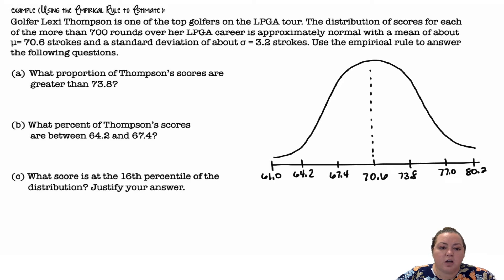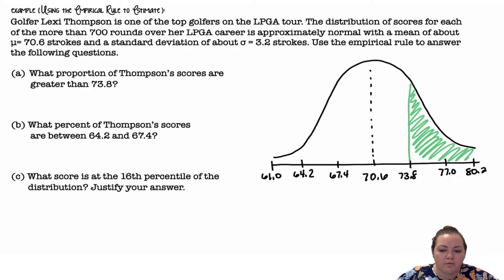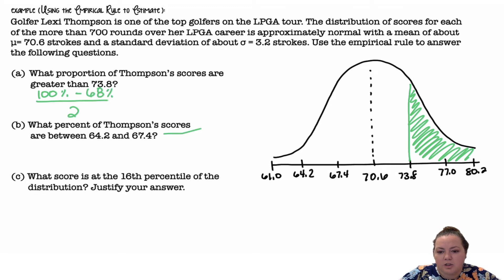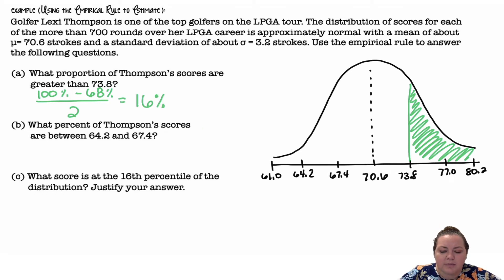What proportion of Thompson's scores are greater than 73.8? Going to 73.8 and shading above, I can think of it as 100% under the curve minus the 68% in the middle, then divide by two because it's only that one section on the right half, and we get 16%. Or I can add 13.5 plus 2.35 plus 0.15 and get 16% that way.